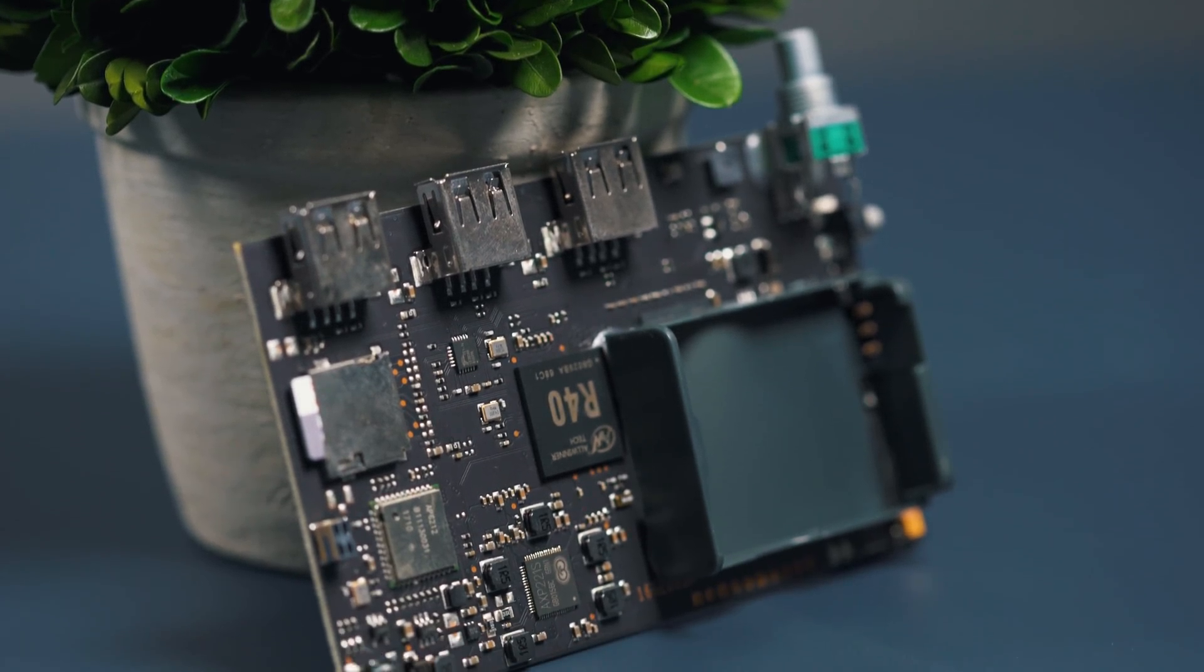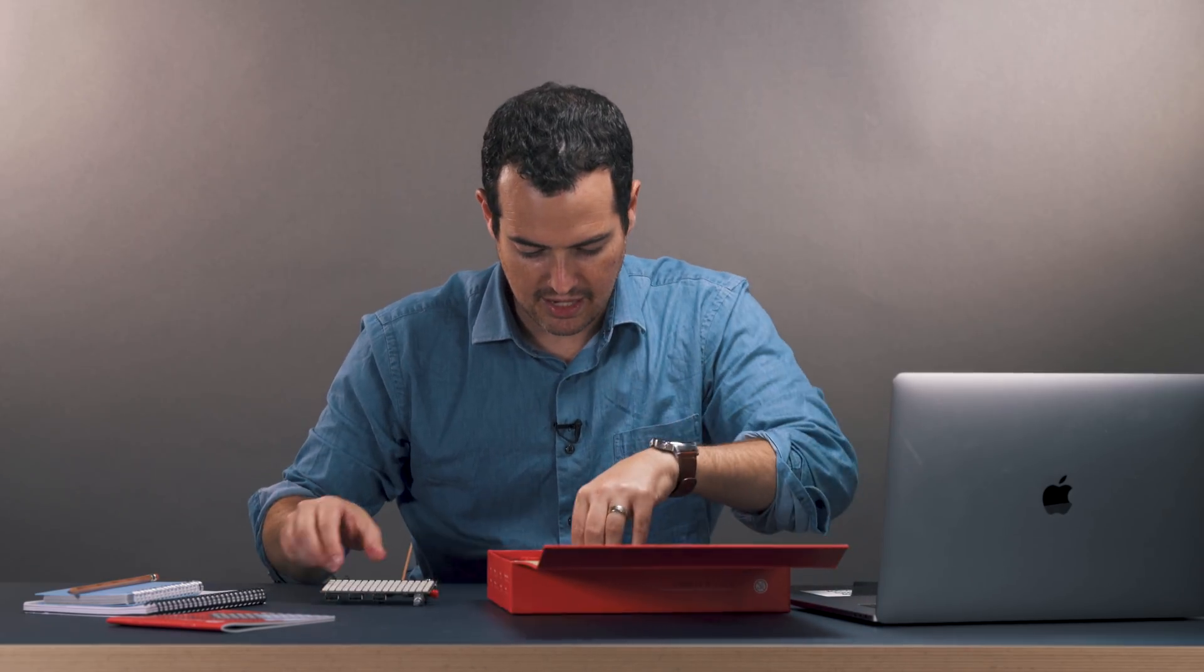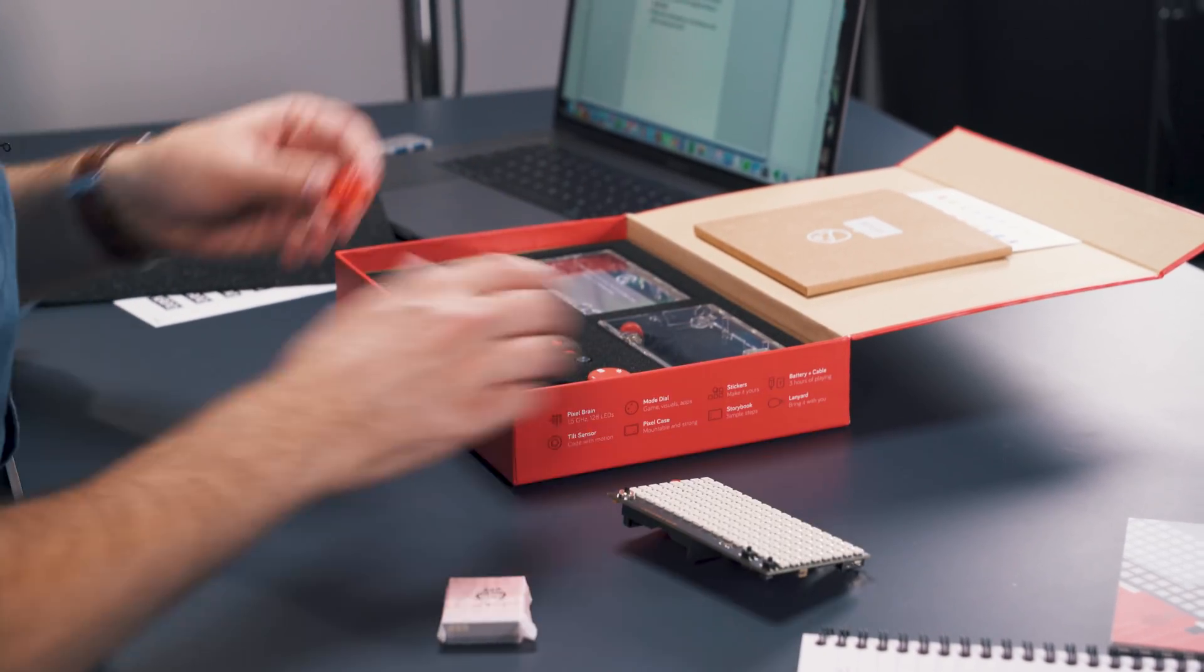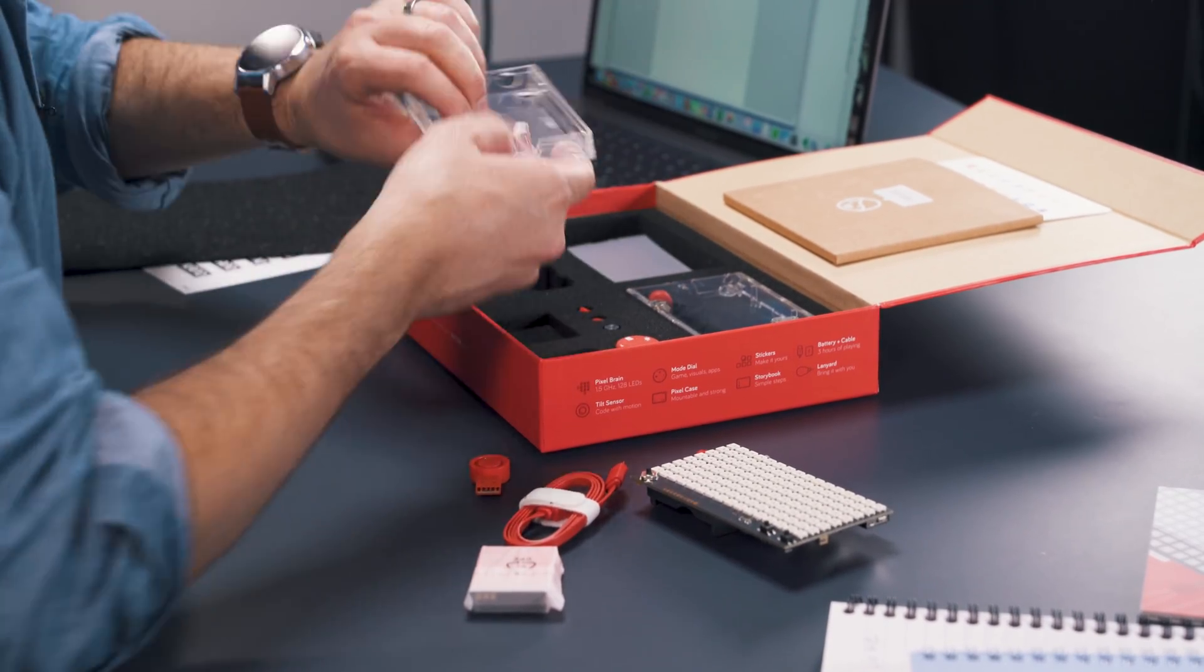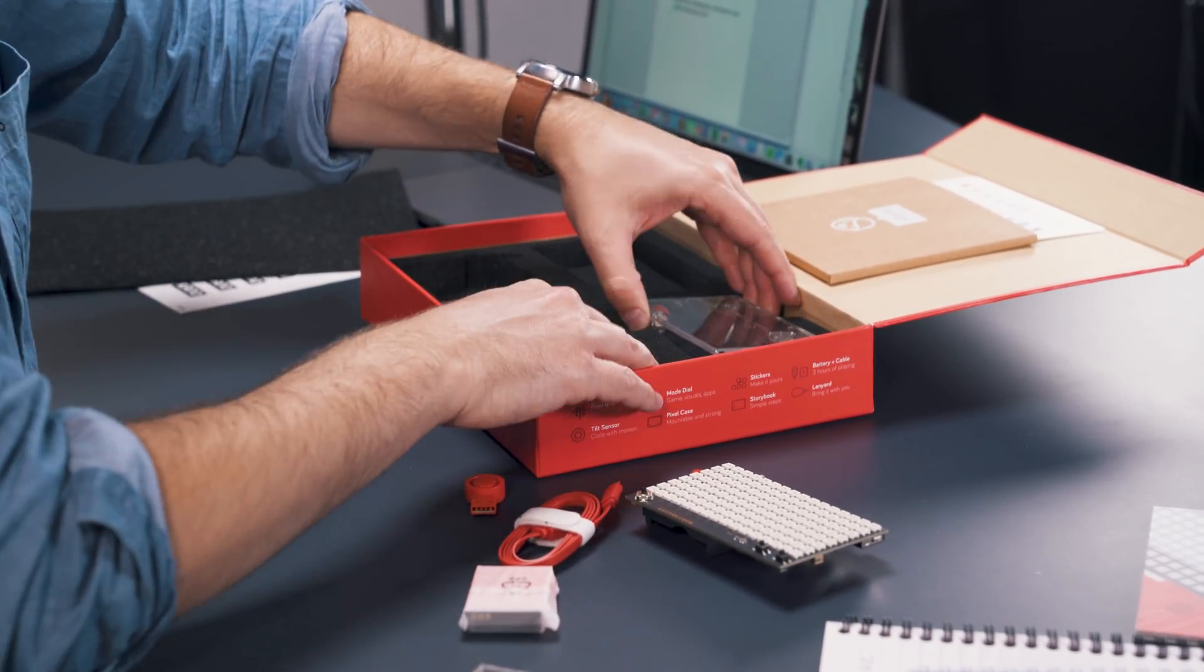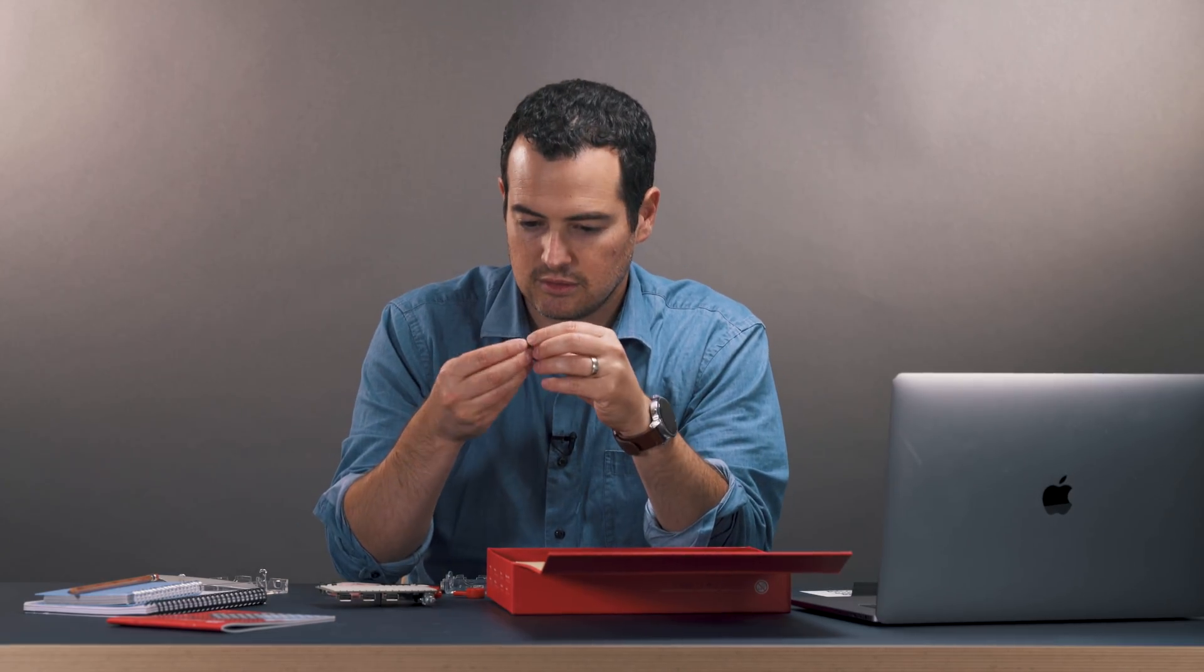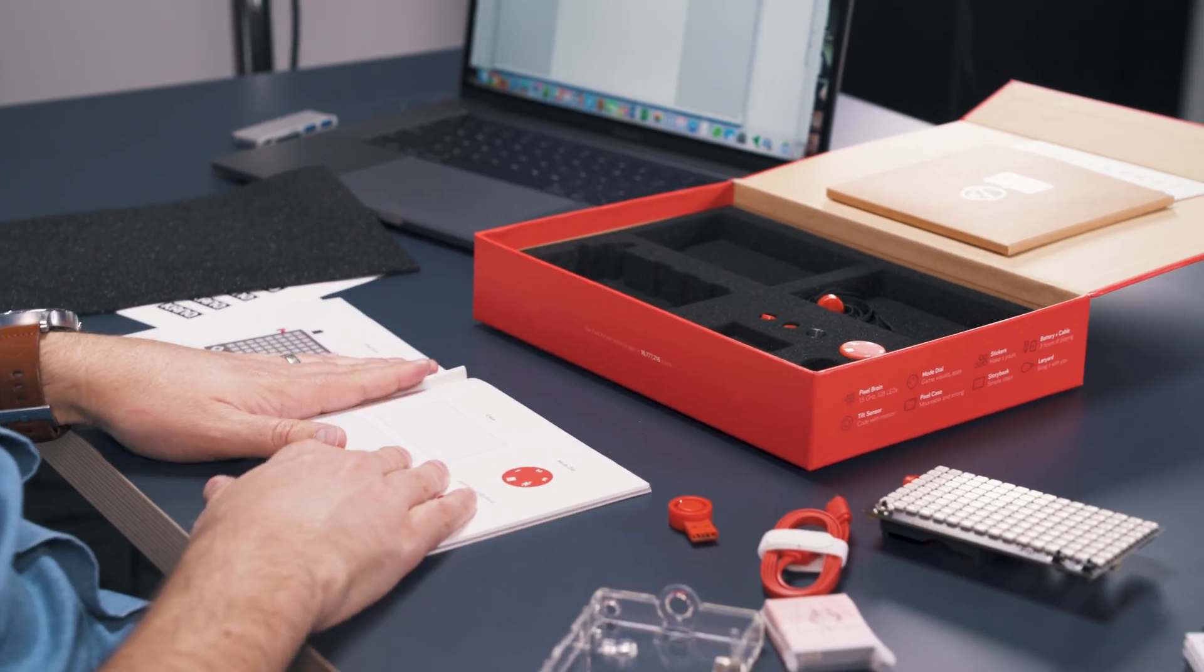All right, so we've got going on here. Essentially this is a single board computer with an LED array that just snaps on top of it. We got some batteries, it's got three USB ports on there for accessories, we got micro USB charging cable, we got a case to hold it in, more stuff for that case, and we got this thing - we'll figure out what this is.